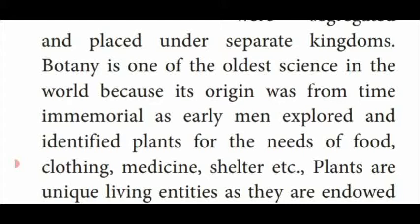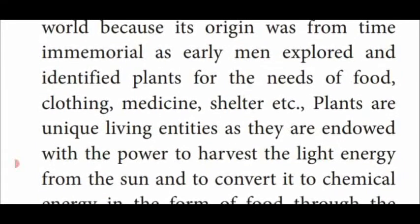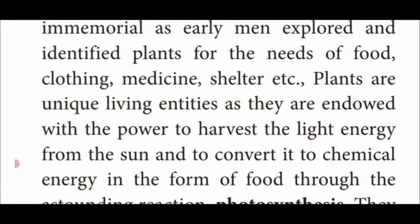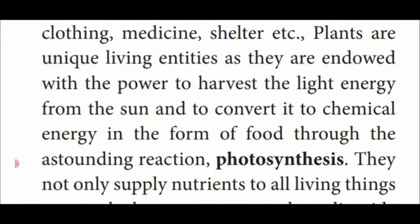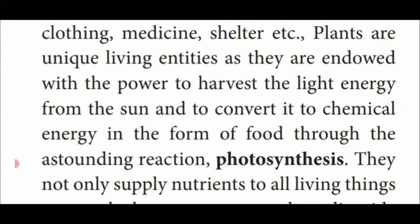Botany is the oldest science used to identify different kinds of plants and their characteristic features. Plants are the important organisms that produce food material for other organisms — a process identified by most scientists in the oldest period. Not only food material, but plants also provide clothing, medicine, and shelter. That is why plants are named as producers, and other organisms depend upon plants for their food and shelter.